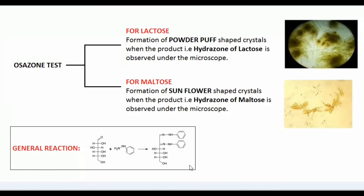This hydrazone forms crystals, and depending upon the shape of the crystals observed under the microscope we can differentiate whether it is maltose or lactose. For lactose, the crystals are powder puff in shape — as you can see in this microscopic image. For maltose, the shape is like a sunflower. So from the shape of these crystals we can determine whether it is lactose or maltose.